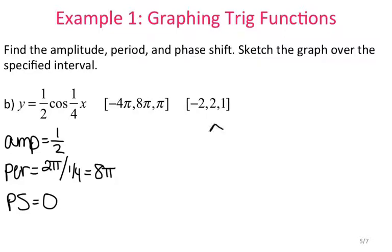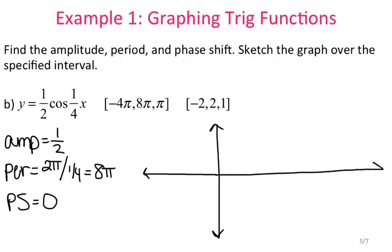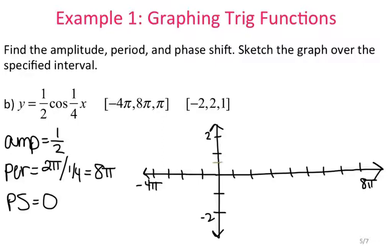Looking at the scale for the x-axis, I'm going from negative 4 pi to 8 pi, scaled by pi. So that's 4 tick marks to the left for negative 4 pi, and 8 tick marks on the right to get to 8 pi. The y-axis is scaled from negative 2 to 2.